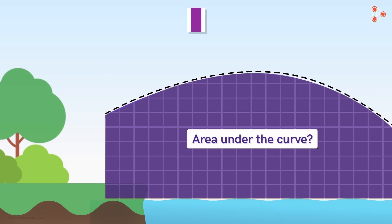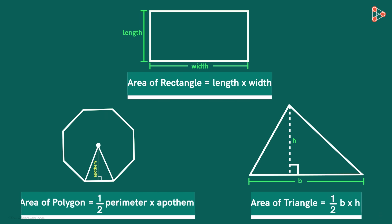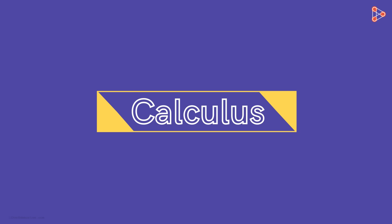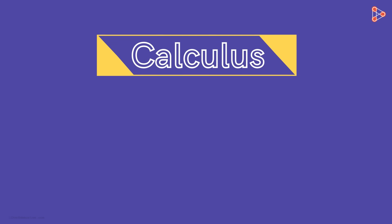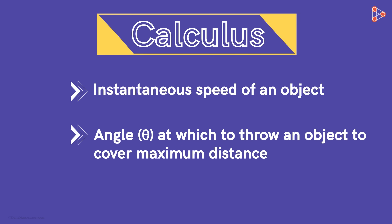You would have guessed by now that calculus helps us to find the answer. We know the area of simple shapes like rectangles, triangles, polygons and so on. Here are the formulas. This is easy because straight lines are involved. But the shapes that we encounter in our daily lives are not that simple as curves are involved. That's where calculus comes into the picture. So we have seen that other than finding the instantaneous speed of an object and the angle at which to throw an object to cover maximum distance, calculus also helps us to find the area of different shapes.